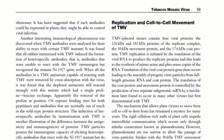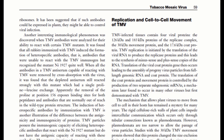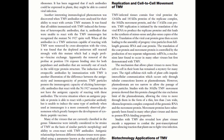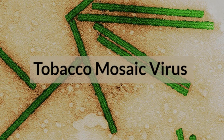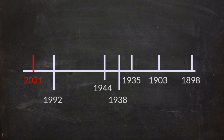In the section on replication and cell-to-cell movement of TMV, which should be the key part of the whole thing, there is very scant information — certainly not enough to prove that this particle is a replication-competent intracellular parasite that by itself is transmitting between plants and causing mosaic disease. So we'll have to go back in time and keep digging down into the reference trail.